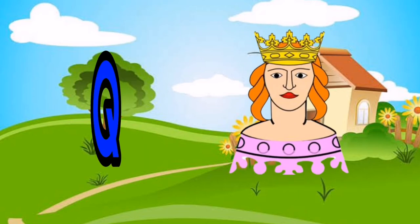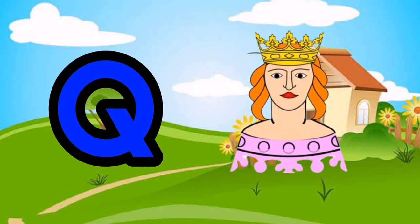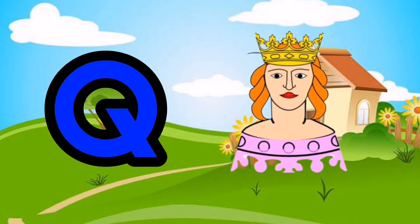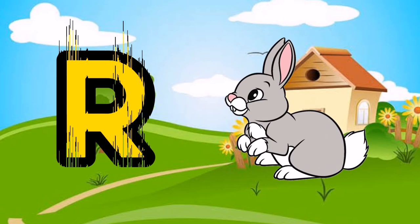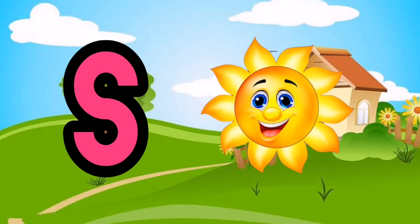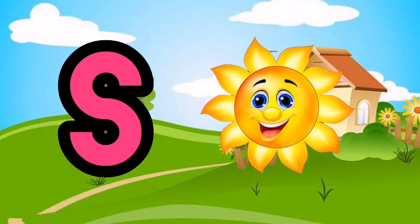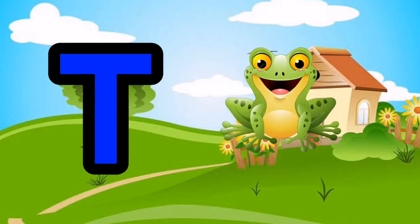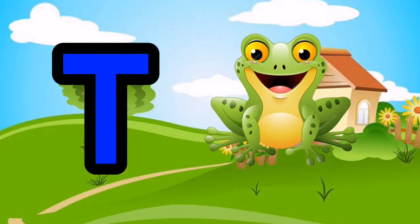Q is for Queen, Q-Q-Queen. R is for Rabbit, R-R-R-Rabbit. S is for Sun, S-S-Sun. T is for Toad, T-T-Toad.